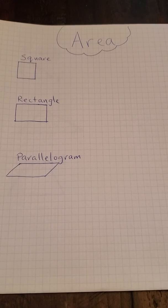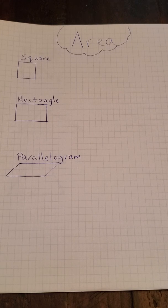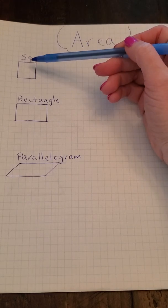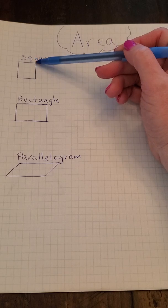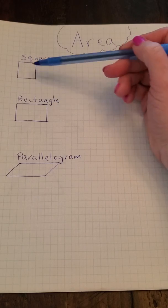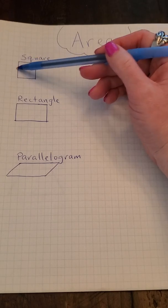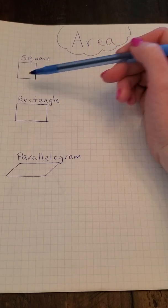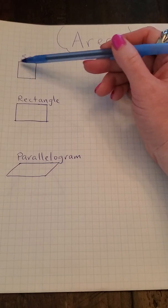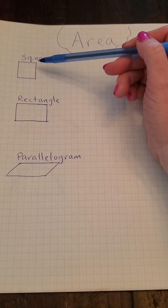Today we're going to review how to find the area of mixed figures. We'll start with a square. In order for something to be a square it has to have four 90-degree angles, it has to have all equal lengths, and it has to have two sets of parallel lines. So this would be a square.